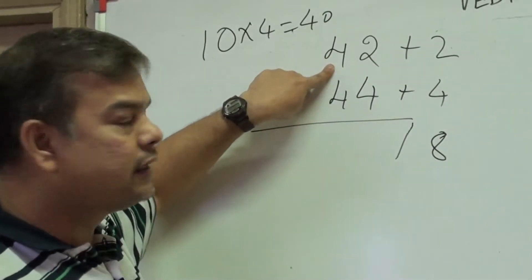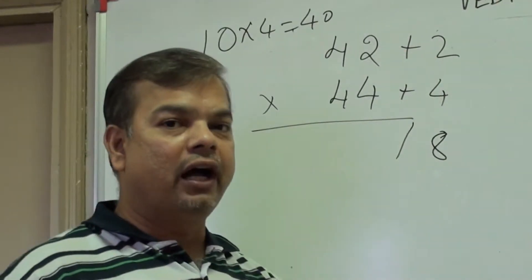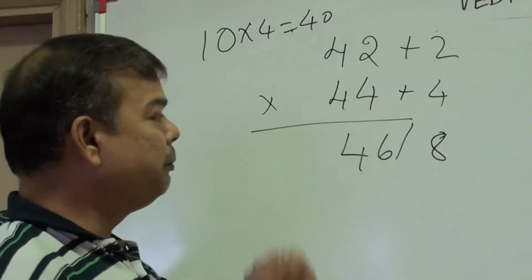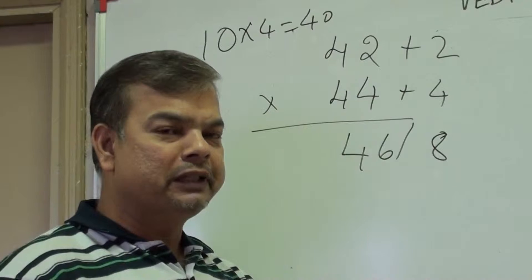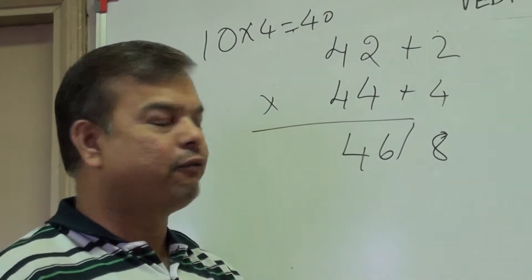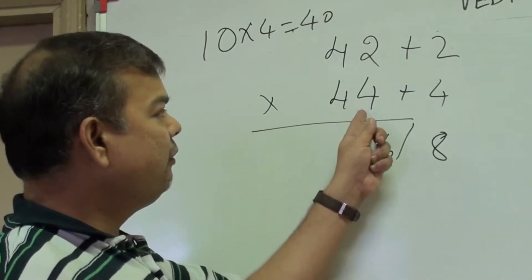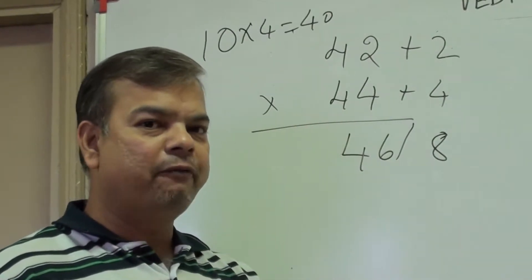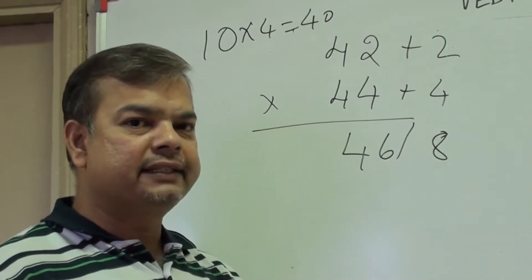For the cross addition: 42 + 4 or 44 + 2 gives 46. So 42 × 44 appears to be 468, but there is a mistake — the answer is not simply 468. After adding and getting 46, we have left out one important step.